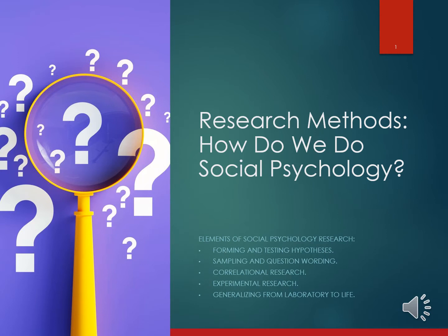The problem is that just reading a description of research findings leads us to think of the many cases we know that support the findings, and thus makes them seem more believable. That's where we get the hindsight bias. So we have to do more research. Social psychologists conduct research because it often uncovers results that could not have been predicted ahead of time. Putting our hunches to the test exposes our ideas to scrutiny. The scientific approach brings surprises, but helps us test explanations about behavior in a rigorous manner.